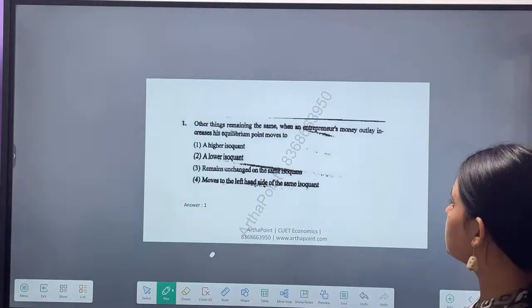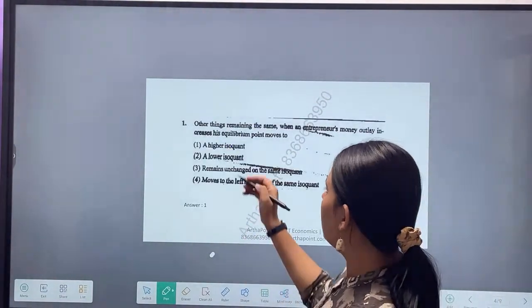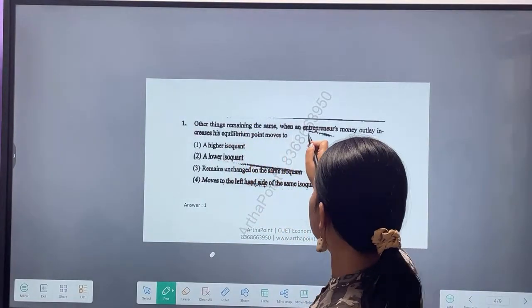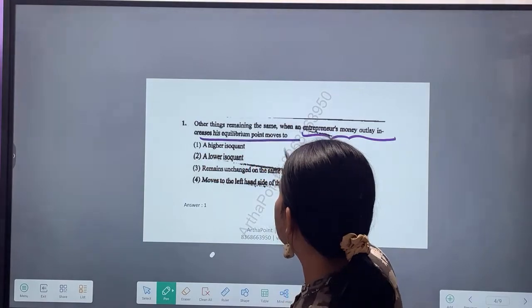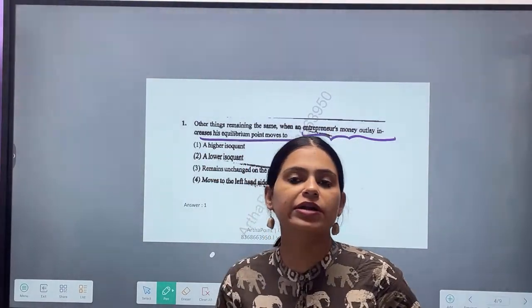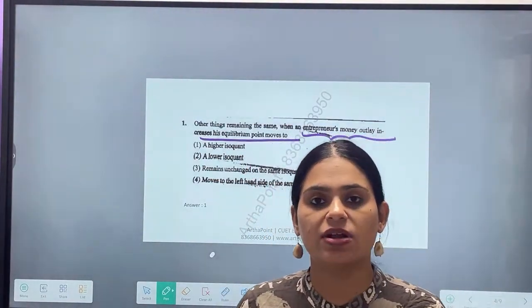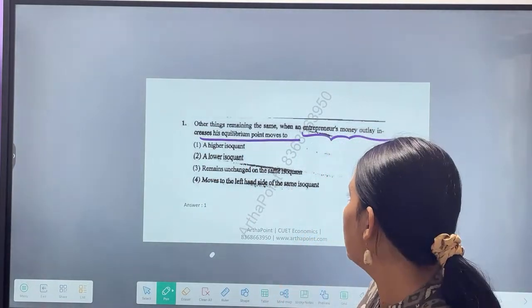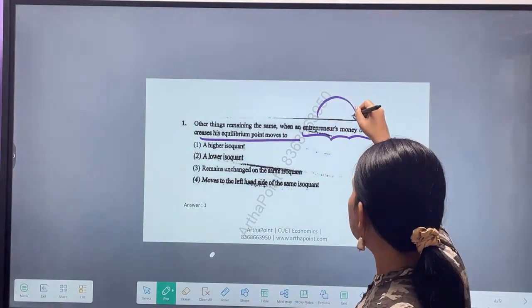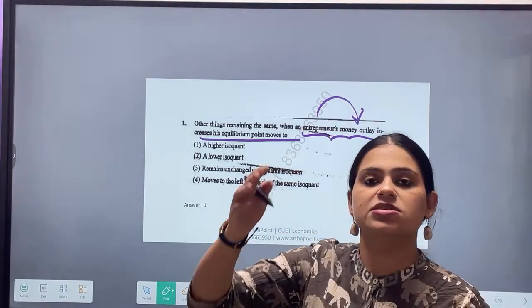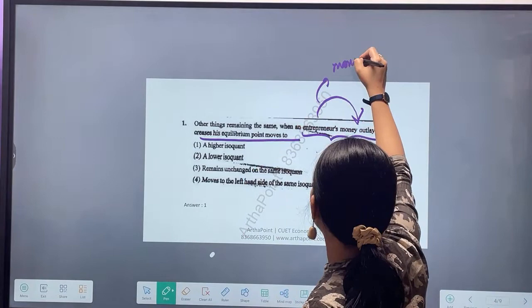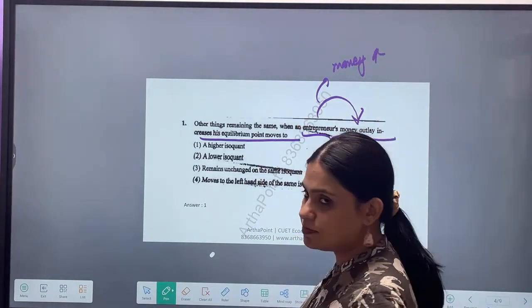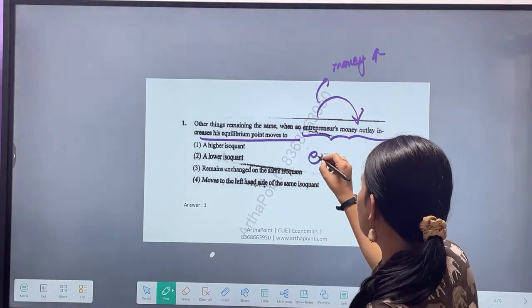I am starting with BHU past year questions. Read the first question: Other things remaining the same, when an entrepreneur's money outlay increases, his equilibrium point moves to. Take some time trying to think about this. When the entrepreneur's money outlay increases, he has more money with him, so what should be the answer?